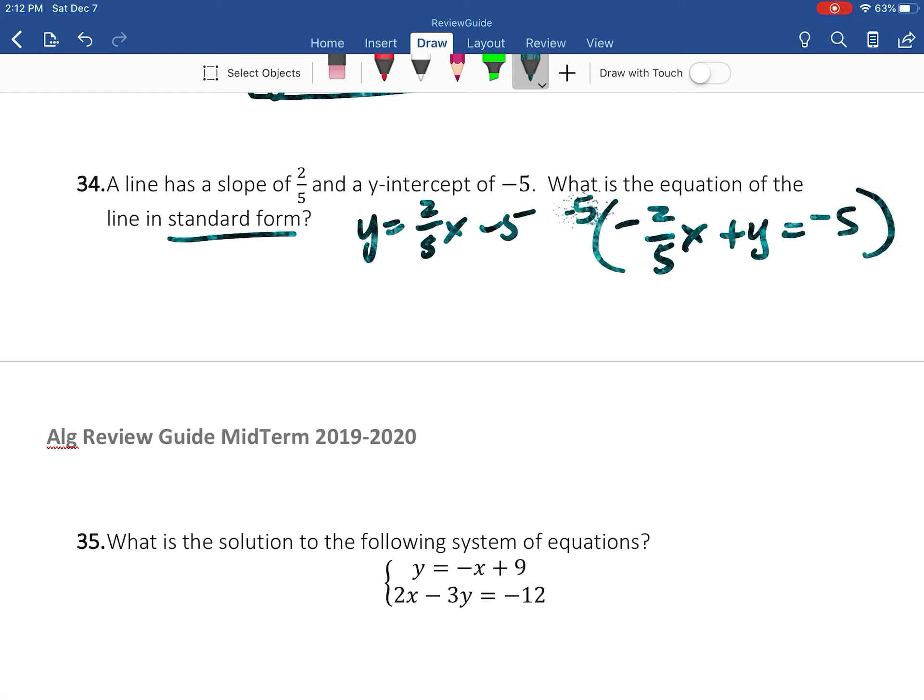I'm going to multiply everything by -5 to get rid of that. And the reason I'm saying -5 instead of just 5 is because I want that negative to go away. So then this is going to become 2x - 5y = 25.